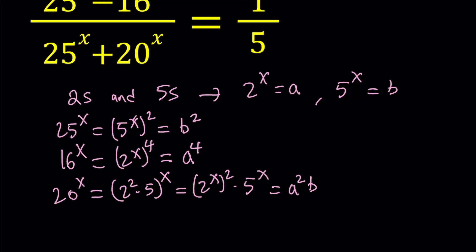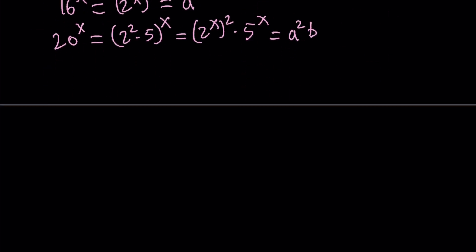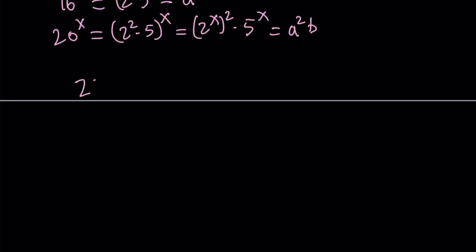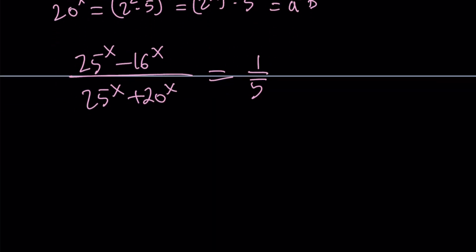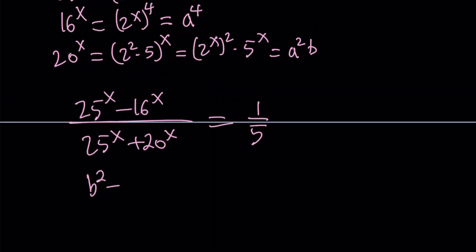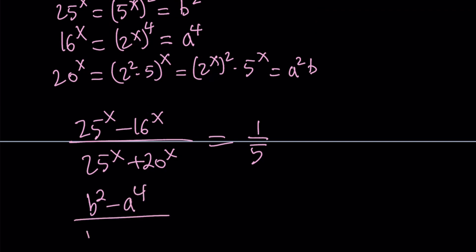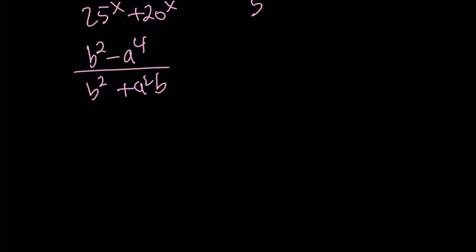So we're ready to substitute everything into the original equation now. Let's go ahead and do that. Replace 25 to the power x with b squared. So we can replace 25 to the power x with b squared, 16 to the power x with a to the 4th power, and b squared again plus a squared b. So this is what we have, and we're going to set it equal to 1 over 5.